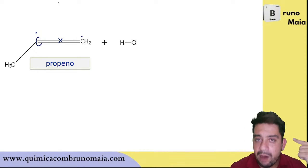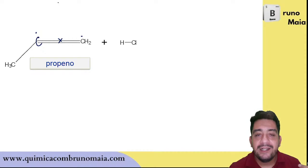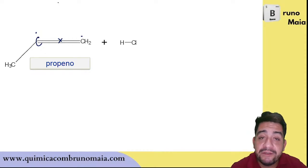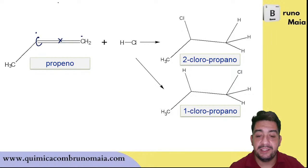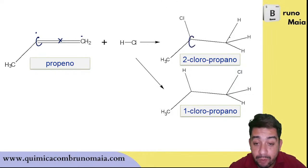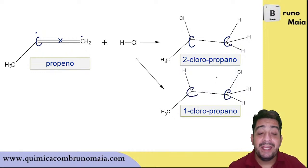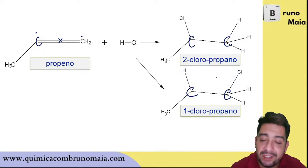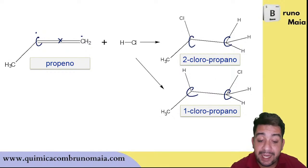Remember that in the isomers lesson I mentioned that to discuss isomers, you need to know everything before it in organic chemistry. When we get to reactions, I need to know everything before, including isomers. This means I have the possibility of forming two substances: chlorine added to the middle carbon with hydrogen at the terminal, or chlorine at the terminal with hydrogen at the middle. So I formed two isomers — specifically, positional isomers. Notice the difference in name: 2-chloropropane and 1-chloropropane.